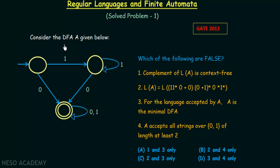The question says: consider the DFA A given below. We have a DFA and a few statements, and we have to find out which of the following statements are false. The first statement says the complement of LA is context-free. The second statement gives a regular expression and asks whether this DFA can be expressed using it. The third statement says that for the language accepted by A, A is the minimal DFA. The fourth statement says A accepts all strings over {0,1} of length at least 2.